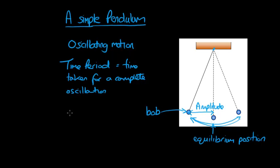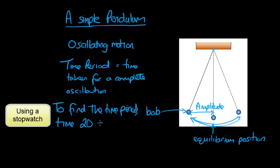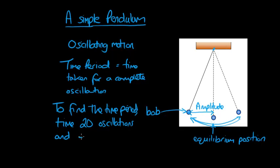One last thing before we look at this flashcard: how would we calculate the time period? Well, one easy way of doing that is to time 20 complete oscillations and then divide that time by 20. So to find the time period, we could time 20 oscillations and divide by 20.